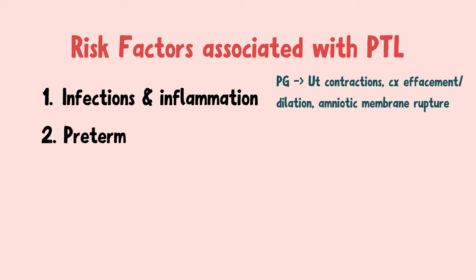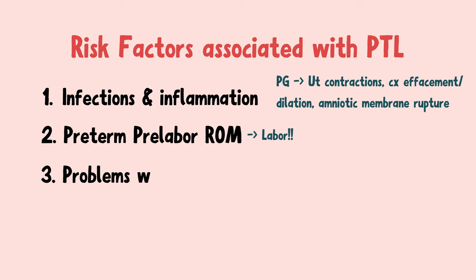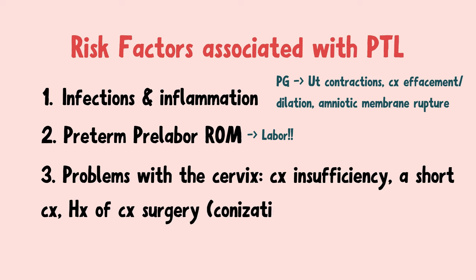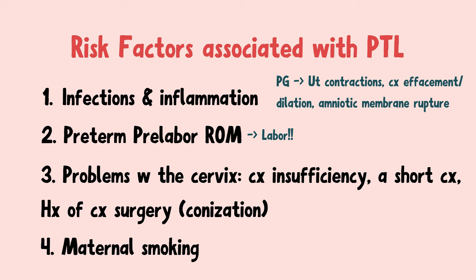Preterm pre-labor rupture of membranes can also cause preterm labor, as the moment your amniotic membranes rupture, you know you're going into labor. Any condition that affects the cervix and causes it to dilate and efface prematurely — such as cervical insufficiency, a short cervix, or history of cervical surgery like conization — can lead to preterm labor. Maternal smoking can affect collagen production in the cervix and also lead to cervical insufficiency.